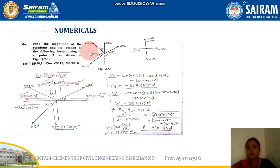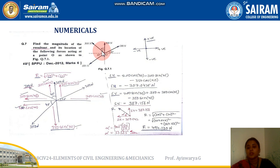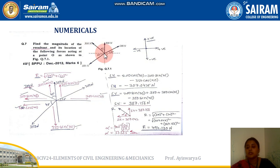For the 300 Newton force, note that 45 degrees is with respect to the y-axis. If the angle is with respect to the x-axis, horizontal is cosθ and vertical is sinθ. But if the orientation is different and theta is with respect to the y-axis, you need to swap: vertical becomes cosθ and horizontal becomes sinθ. So the vertical will be 300 cos 45 and horizontal will be 300 sin 45.